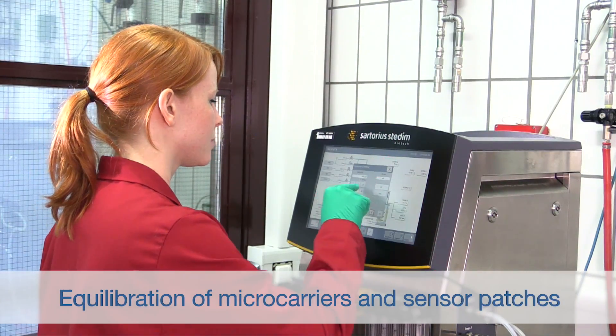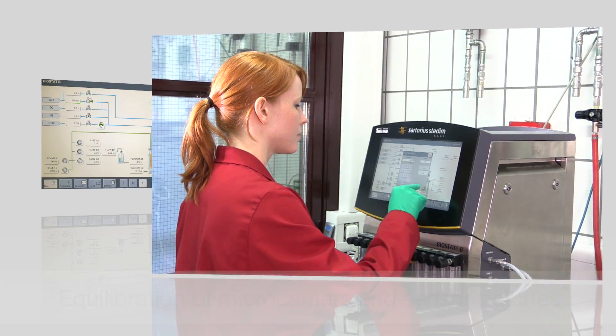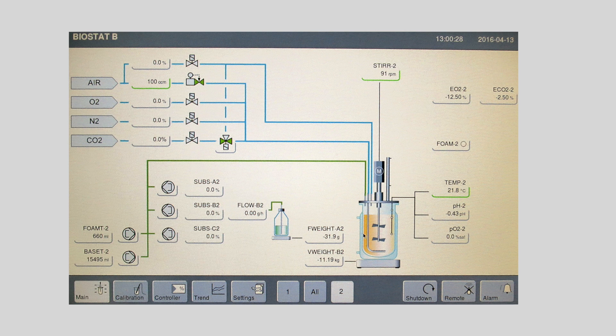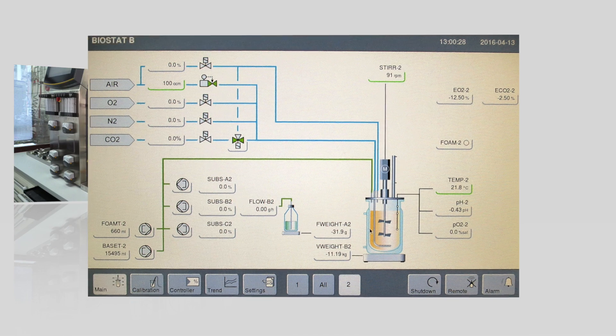Agitation, temperature regulation and headspace aeration are then switched on and set to 91 rpm, 37 degrees Celsius and 0.2 VVM respectively, which in our case means 100 mls per minute. In order to allow proper wetting of the sensor patches, equilibration must be performed for at least two hours. However, six to 12 hours is recommended.